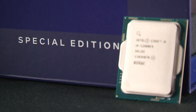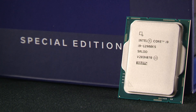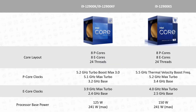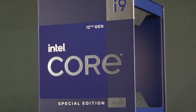What separates the KS from the K is that the KS is a specially binned processor, which has higher base and boost clock speeds — 5.5GHz on the KS vs 5.2GHz on the K model for P-core boost frequency, and 4GHz on the KS vs 3.9GHz on the K model for E-core boost frequency, meaning there should be a performance boost which we will see in the benchmark results later.